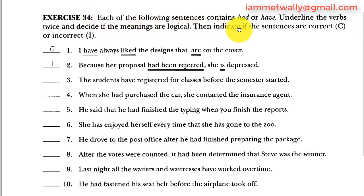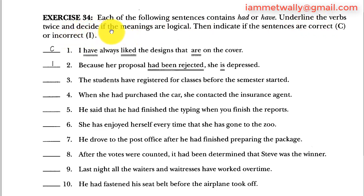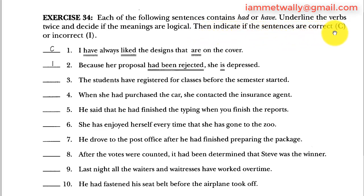Exercise 34: Each of the following sentences contains had or have. Underline the verbs twice and decide if the meaning is logical, then indicate if the sentence is correct (C) or incorrect (I).